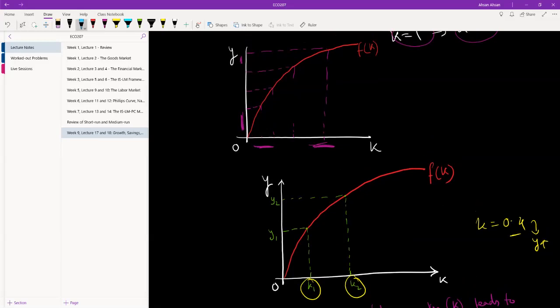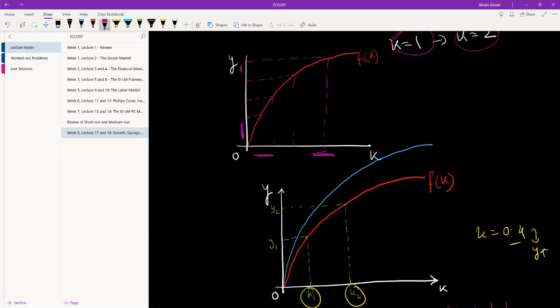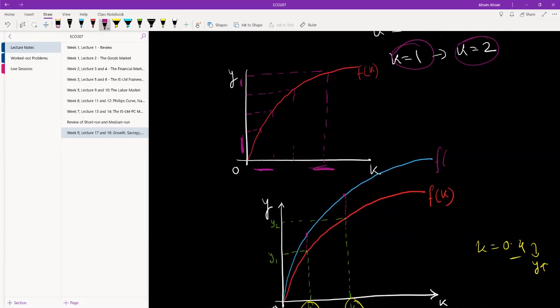And what that is going to look like is this. So see what has happened. At this level of k now we can produce this much. At this level of k we can now produce this much. And so we're going to call this an example of technological progress.